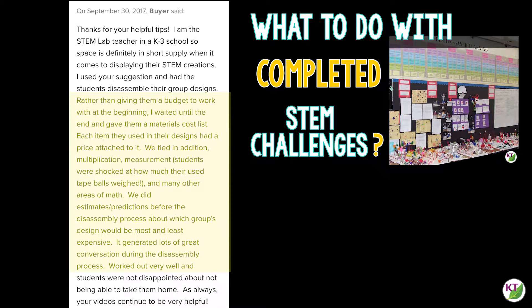Another thing you can do is flip it around and do it backwards — this idea actually came from somebody who left a comment on one of my other STEM challenge videos. Rather than giving them a budget to work with at the beginning, they waited until the end and gave students a materials cost list. Each item used in their designs had a price attached to it. They tied in addition, multiplication, measurement — students were shocked at how much their used tape balls weighed — and many other areas of math. They did estimates and predictions before the disassembly process about which group's design would be the most and least expensive, and it generated lots of great conversation during the disassembly process. I'd love to give this viewer credit, but unfortunately the username just says 'buyer' — so whoever you are out there, thank you so much for sharing these great ideas.